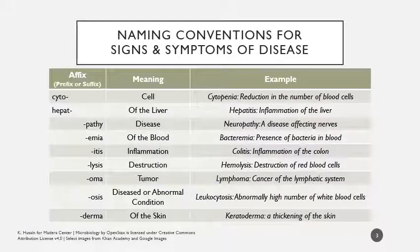Before we go much further, I want to touch on some prefixes and suffixes that are very important for understanding diseases and disease progress. These are naming conventions for different signs and symptoms. Remember that a sign is something a clinician can actually observe and measure — like the size, shape, and texture of a rash — while a symptom is more subjective, what the patient is telling you, like how itchy a rash is, fatigue, or pain levels. I recommend becoming very familiar with these terms, especially as we progress into the next unit on specific microbial diseases, and as future clinicians.